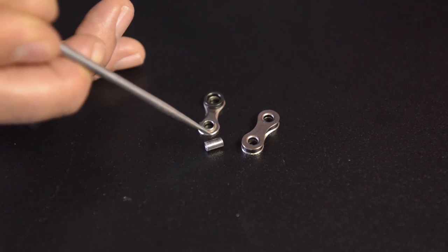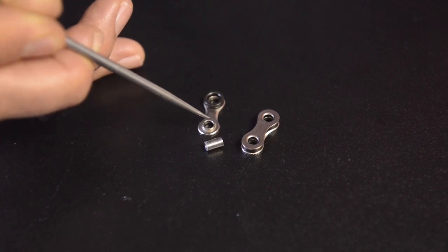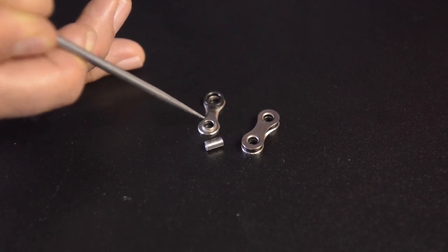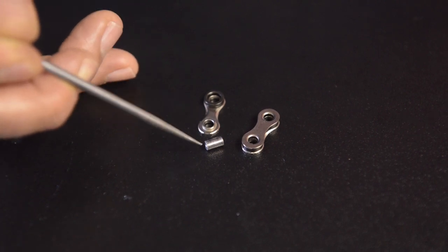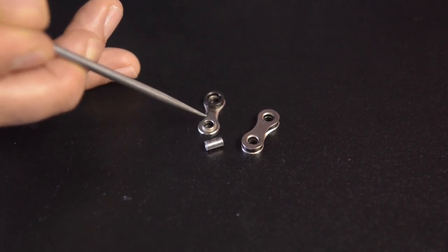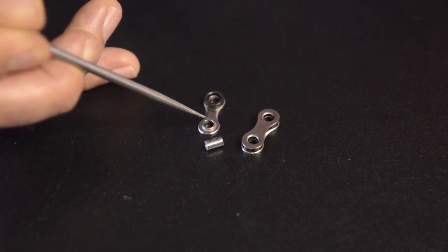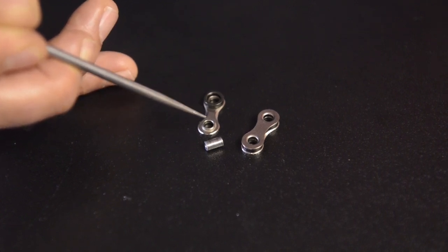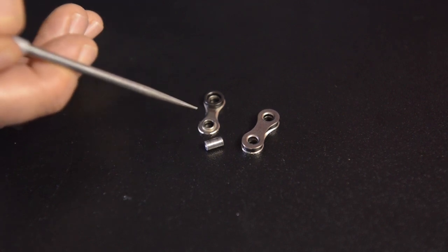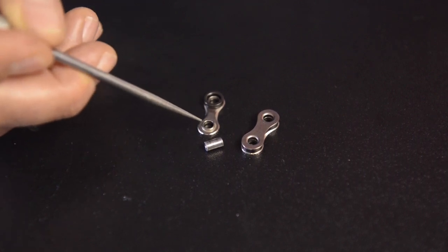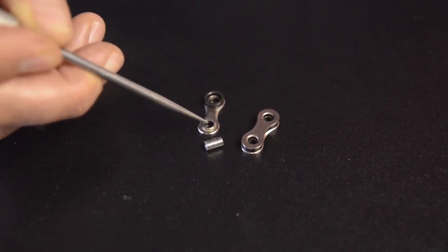Because the pin is so smooth and because the radius of the inner plate is so constant, you don't have any high spots. If you have high spots on the pin or high spots on the inner link, you're going to get wear. Because Connex has done away with that by virtue of extra work in polishing the pins and precision manufacturing, the chains don't wear as quickly.